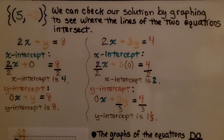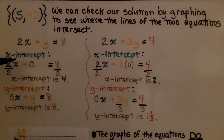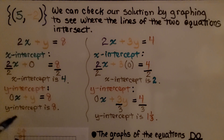We can check our solution by graphing to see where the lines intersect. Our solution was (5, negative 2). For the first equation, we find the x-intercept by setting y to 0: 2x equals 8, so x equals 4. For the y-intercept, we set x to 0: y equals 8. So the x-intercept is 4 and the y-intercept is 8.